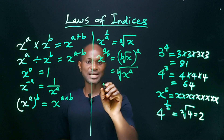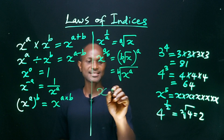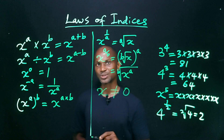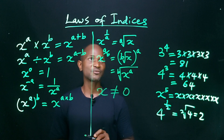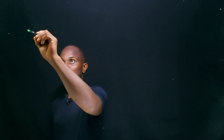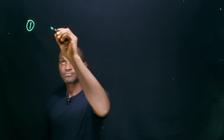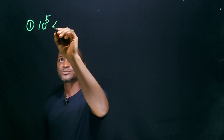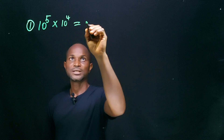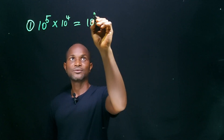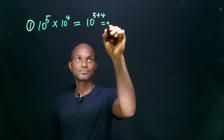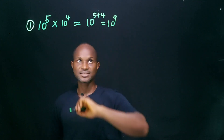There is a very important caveat: x must not be equal to zero. This is really important. With this, we head on to solving Exercise 1e — simplify the following. Number 1: 10 raised to power 5 multiplied by 10 raised to power 4. This simply gives us 10 raised to power 5 plus 4, that is 10 raised to power 9.